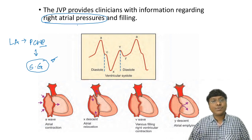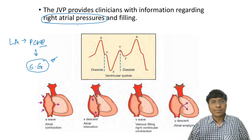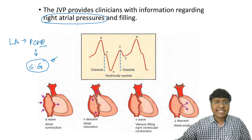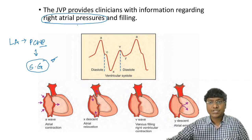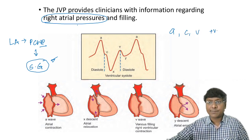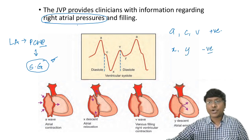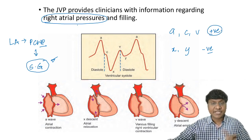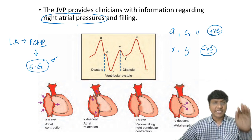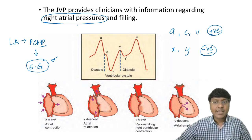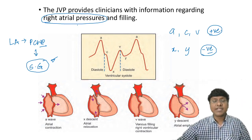Now let's move to the discussion of JVP. In JVP, there are five important waves: A, C, and V are the positive waves — meaning the pressure in the right atria increases. X and Y are the negative waves — meaning the pressure in the right atria decreases.